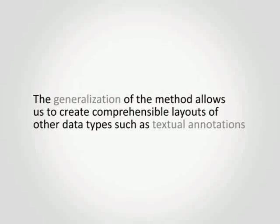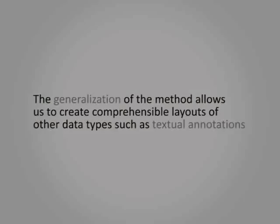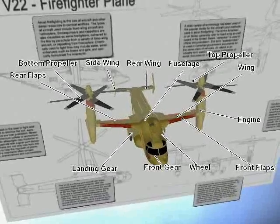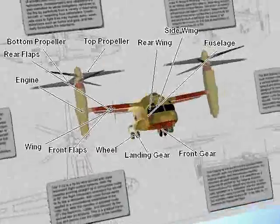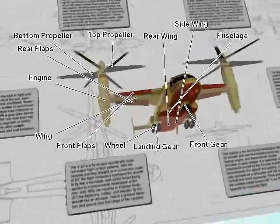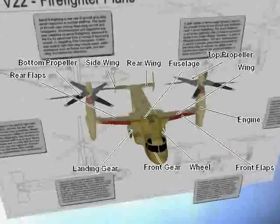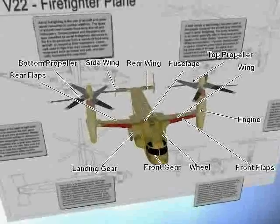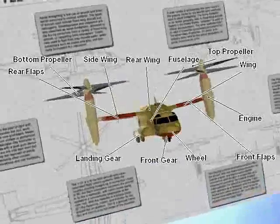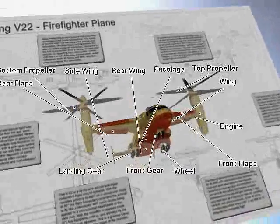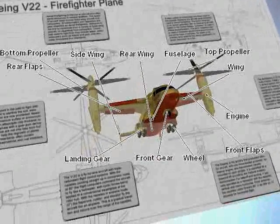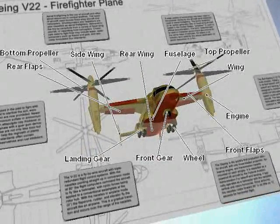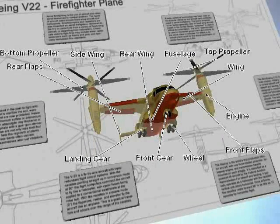Besides explosion diagrams, our system supports comprehensibly filtered annotations as well. To enable temporally coherent updates, we disable reselection of representatives and freeze the order of labels during camera motion. To avoid crossing anchor lines, we maximize the distances between labels as well as the distances between anchor points. Notice, only a few lines cross during motion. Once camera movement stops, we resolve the remaining crossings by animating to the optimal layout.